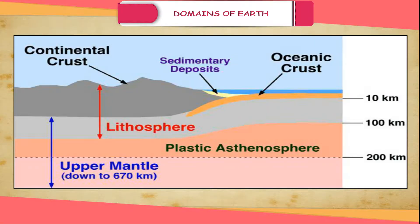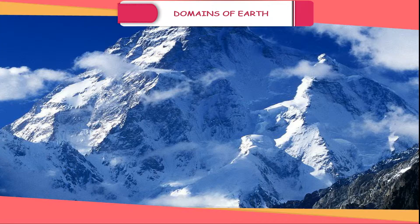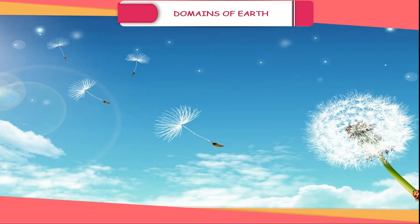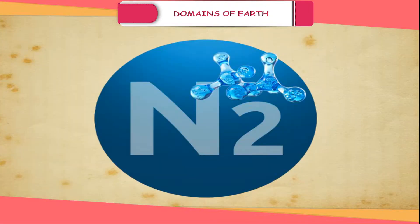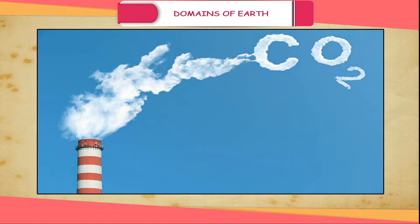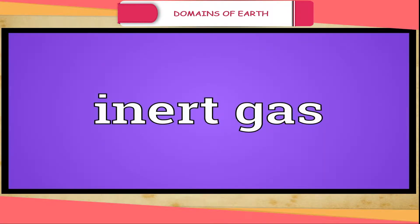The solid portion of the Earth on which we live is called lithosphere. Rocks in their solid form are found only in the lithosphere. The gaseous envelope of air that surrounds the Earth is known as atmosphere. The atmosphere contains oxygen, nitrogen, carbon dioxide and inert gases.